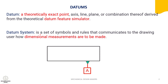Datum system is a set of symbols that explains to the drawing user how dimensional measurements are to be made. Using this datum system, the inspection of parts will be carried out. Here you can see the example of how the datum is mentioned in a drawing.